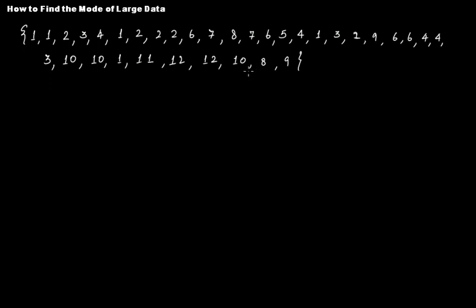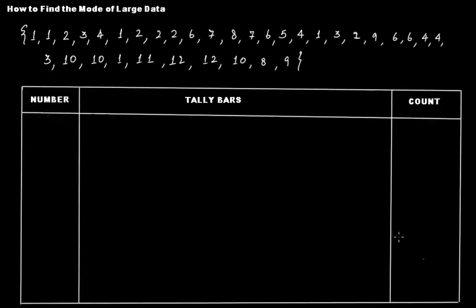We are going to use tally marks. First, you will make a column of all the numbers present here, mention them, then use tally marks to count their occurrence, and then the final count. So let's begin. First you have to write all those values in ascending order.